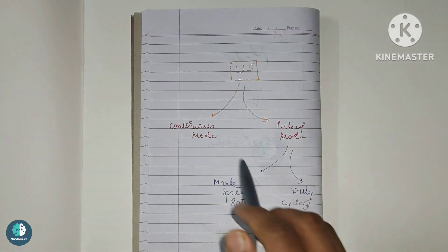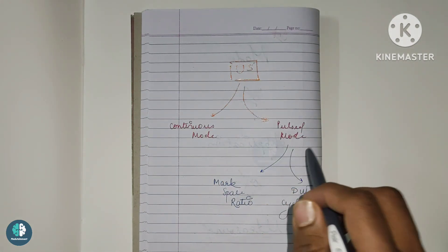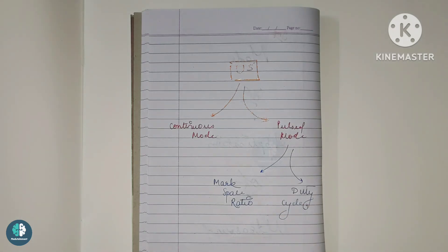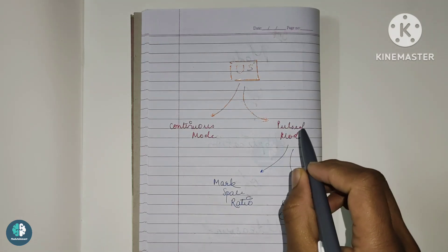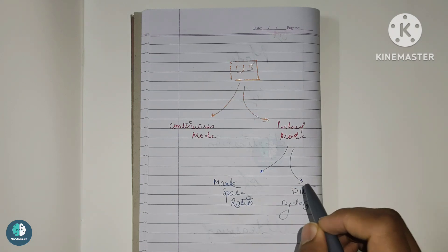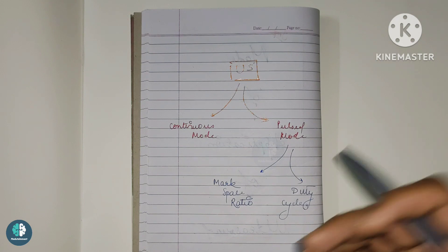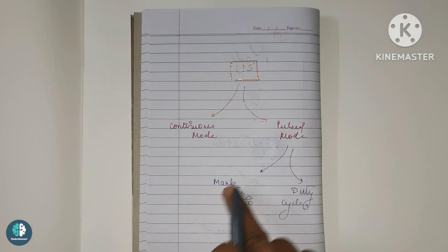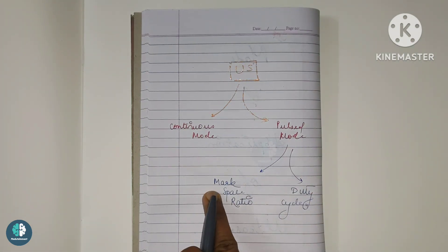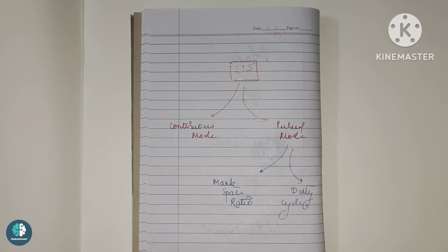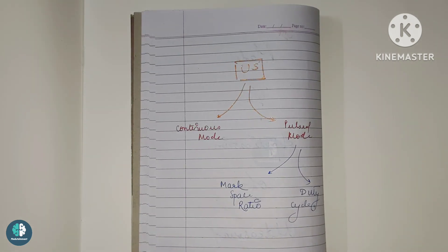The pulsed mode is more preferred in case of ultrasound. The pulsed mode in turn consists of some important terminologies used while giving pulsed mode. We have two things: the first one is the mark space ratio and the second one is the duty cycle. So two important things in the pulsed mode — mark space ratio and the duty cycle.